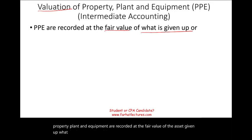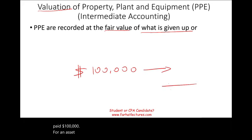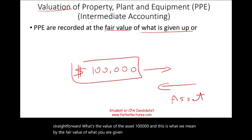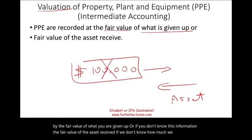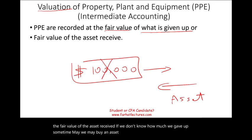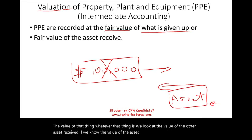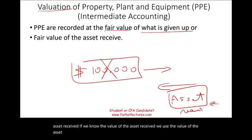What is given up? What did you give up? Usually, let's assume you paid $100,000 for an asset. You gave up $100,000 and you got the asset in return — that's pretty straightforward. The value of the asset is $100,000. This is what we mean by the fair value of what you are giving up. Or, if you don't know this information, the fair value of the asset received. If we don't know how much we gave up, sometimes we may buy an asset other than cash, and if we don't know the value of that asset, we look at the value of the asset received as the valuation basis.